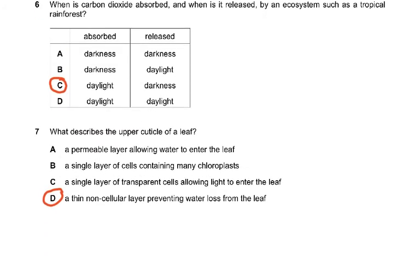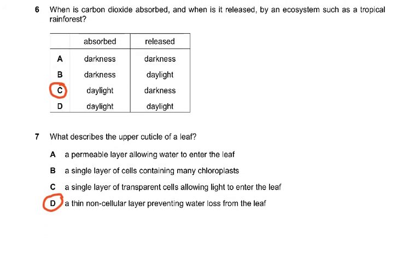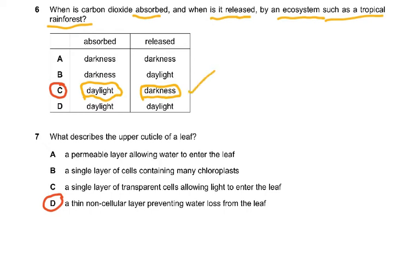Question number 6: when is carbon dioxide absorbed and when is it released by an ecosystem such as a tropical rainforest? It is absorbed during daylight because that is when there is a high rate of photosynthesis. It is released during darkness when the plants are only respiring. During the day, CO2 is used in photosynthesis; at night, all the trees are only respiring, so CO2 is released.